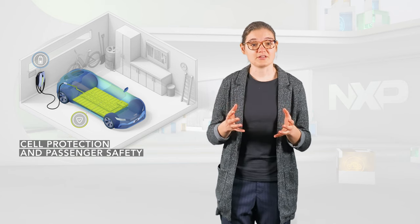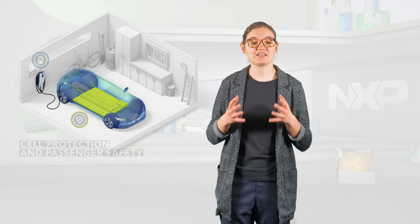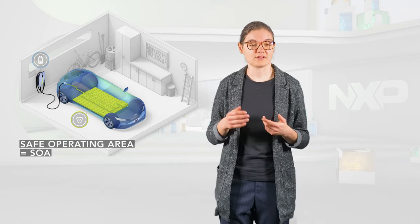Now let's talk about the function of a battery management system. A battery management system has four main functions. The first is the cell protection and passenger safety. The battery management system ensures that each lithium-ion cell in the battery pack operates within its safe operating area or SOA, defined by voltage, current and temperature.